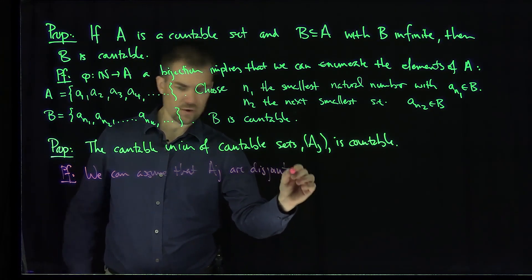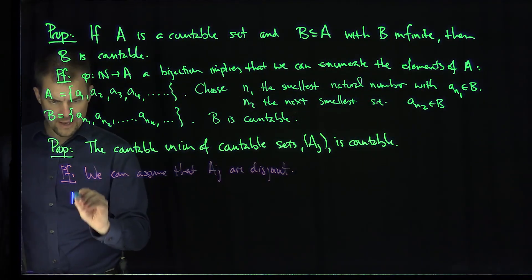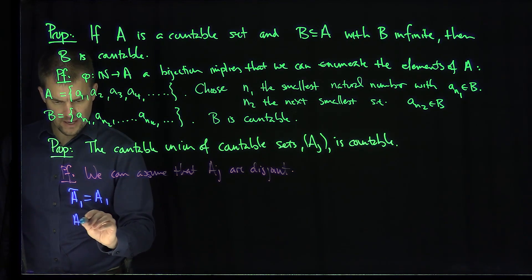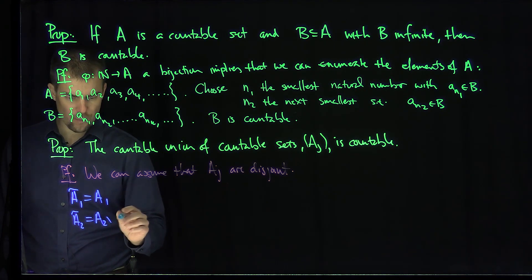Now, how do I do that? How do I assume that A_J are disjoint? Well, what I can do is I can replace A_J. I can set A1 tilde just to be A1. I can set A2 tilde to be A2 minus everything that was in A1, take away the things that are in A1.